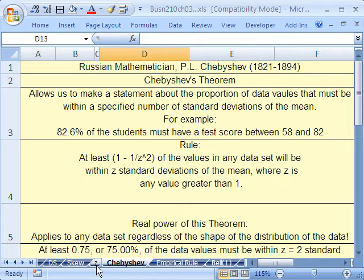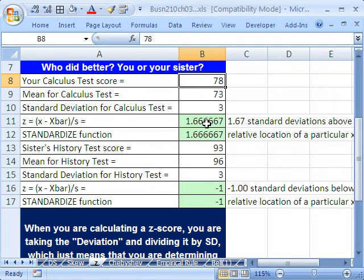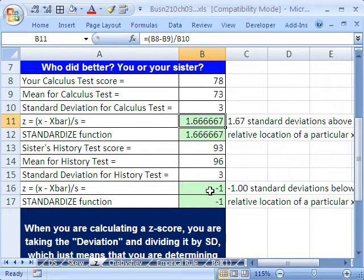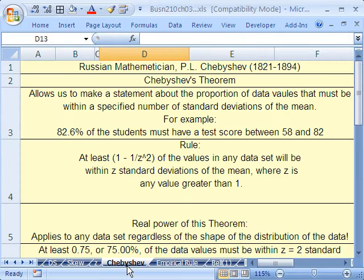We just got done talking about z-score. Remember, standard deviations above or below the mean. So you were 1.67 standard deviations above, and your sister was minus 1 standard deviations.